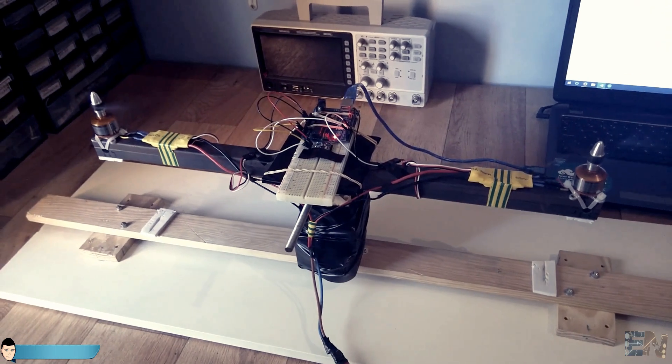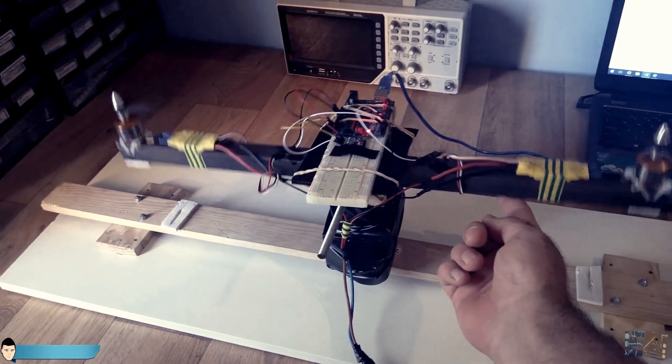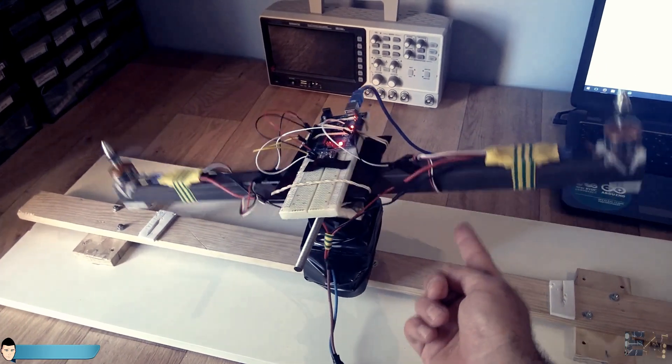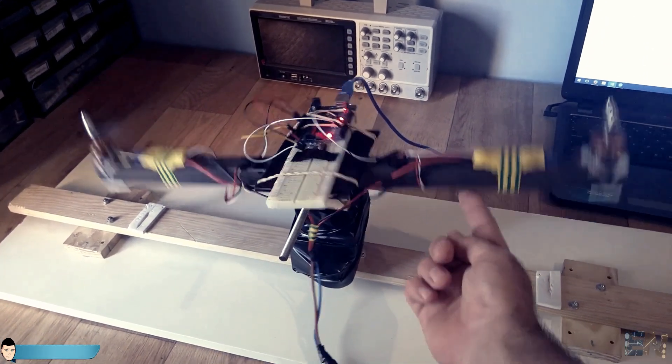The drone could now fly straight even if I push it around. As you could see, the metal bar gets always horizontal.